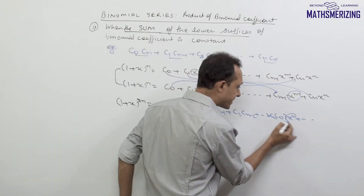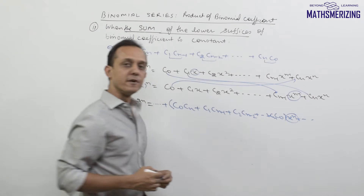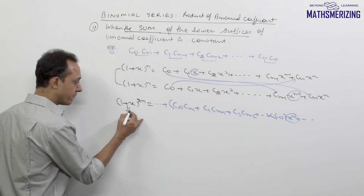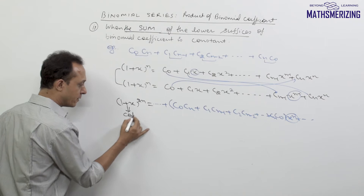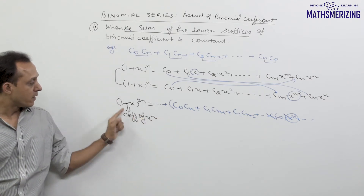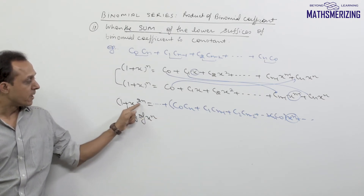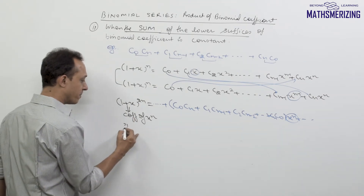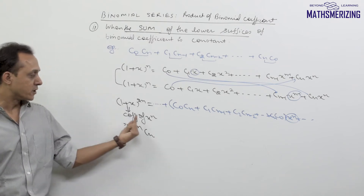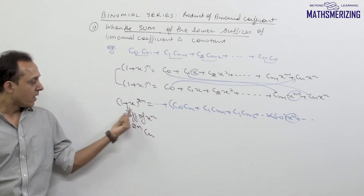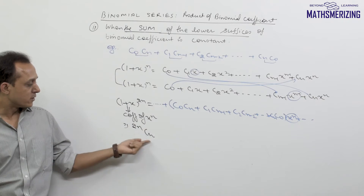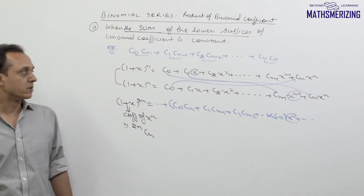We need the coefficient of x^n in (1+x)^(2n). The coefficient of x^r in (1+x)^n is nCr, so the coefficient of x^n in (1+x)^(2n) is simply 2nCn. That is the answer to this question.